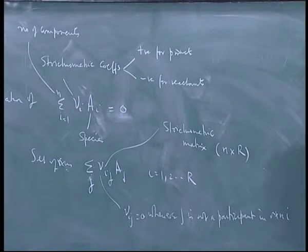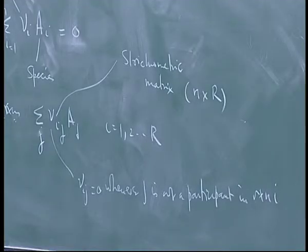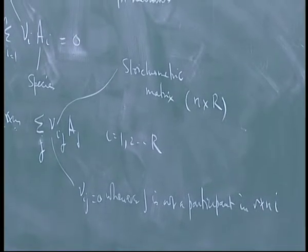In this representation, what we do is to say nu ij equal to 0 whenever j is not a participant in reaction i.